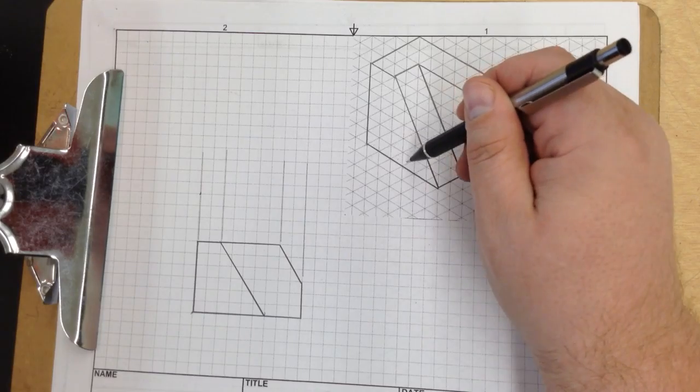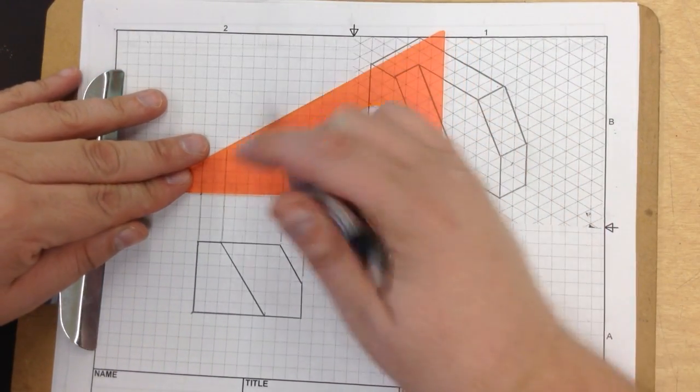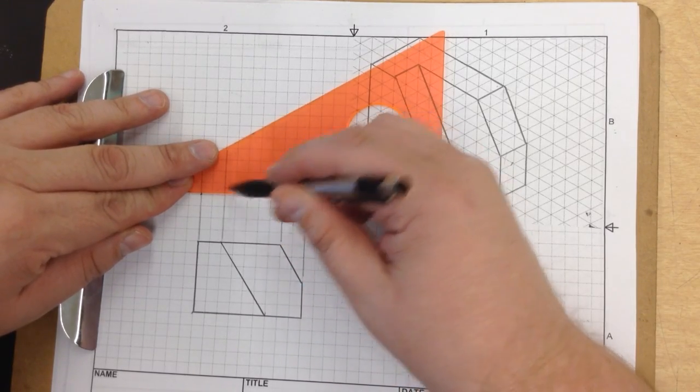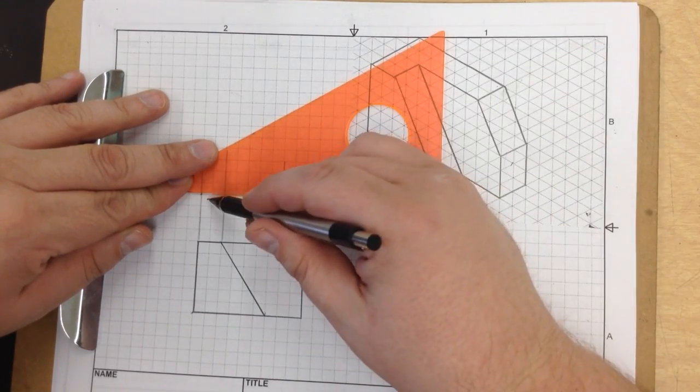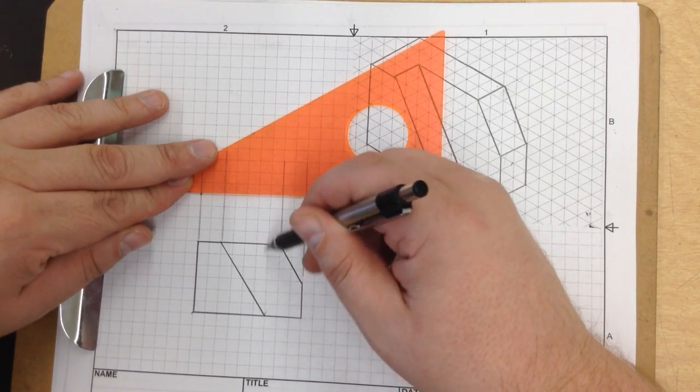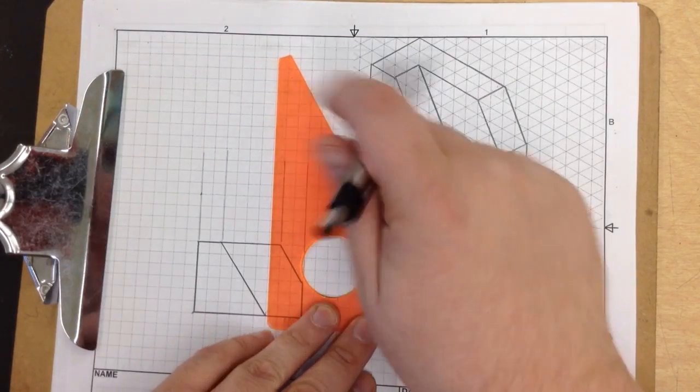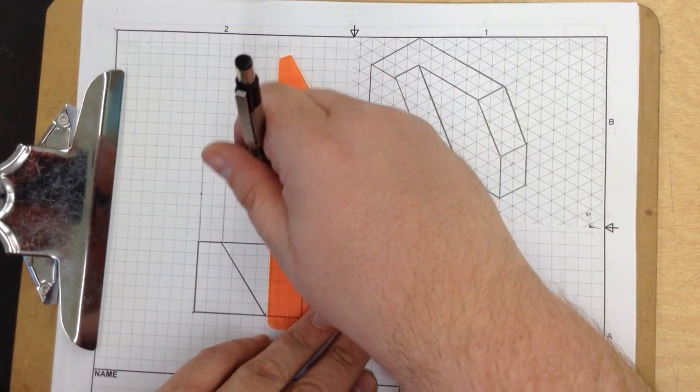And then it's 1, 2, 3, 4, 5, 6, which is 1, 2, 3, 4, 5, 6, 1, 2, 3, 4, 5, 6. It looks like I forgot to transfer that detail up, which is why I didn't see it. There we go.